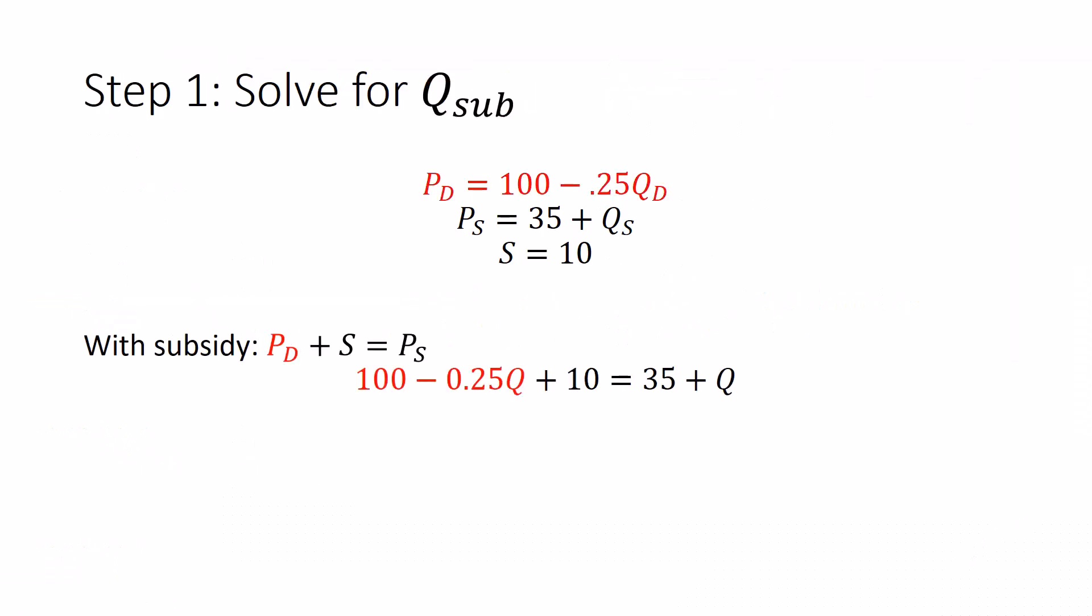So we're going to solve for Q sub, which is the subsidy quantity. I'm going to take this demand price, P equals 100 minus 0.25Q, and substitute it into my PD plus S equals PS equation. That's going to fill in this spot here. Then I'm going to substitute in my supply price, 35 plus Q, for the PS over here. And then I'm going to substitute in my subsidy of 10. So I'm left with this equation: 100 minus 0.25Q plus 10 equals 35 plus Q. When I solve for that Q, I will have my Q sub.